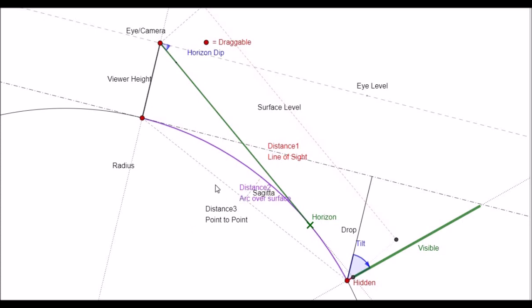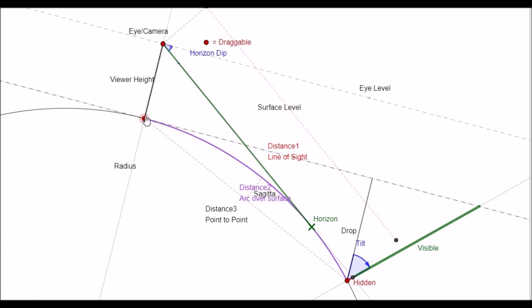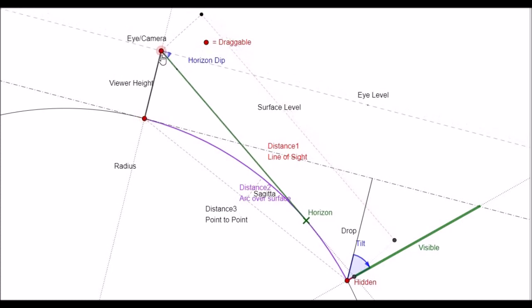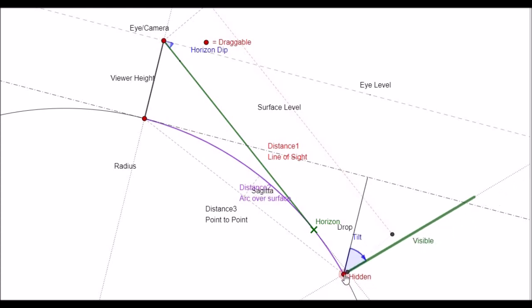So this diagram is on the Metabunk curvature calculator and the diagram is interactive so you can click on the red points and move them around. So you can vary your camera height and you can vary the distance between the viewer and the object by moving either the object or the viewer as you choose.